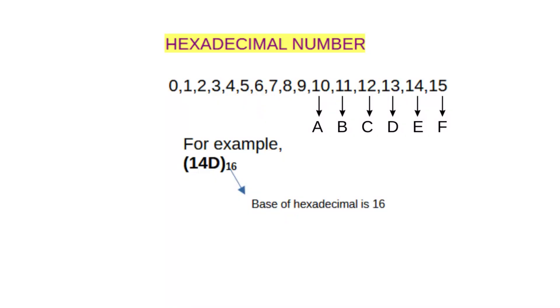The next one is hexadecimal number. We represent hexadecimal numbers using digits 0, 1, 2, 3, 4, 5, 6, 7, 8, 9, A, B, C, D, E, and F. The base or radix of hexadecimal number is 16.